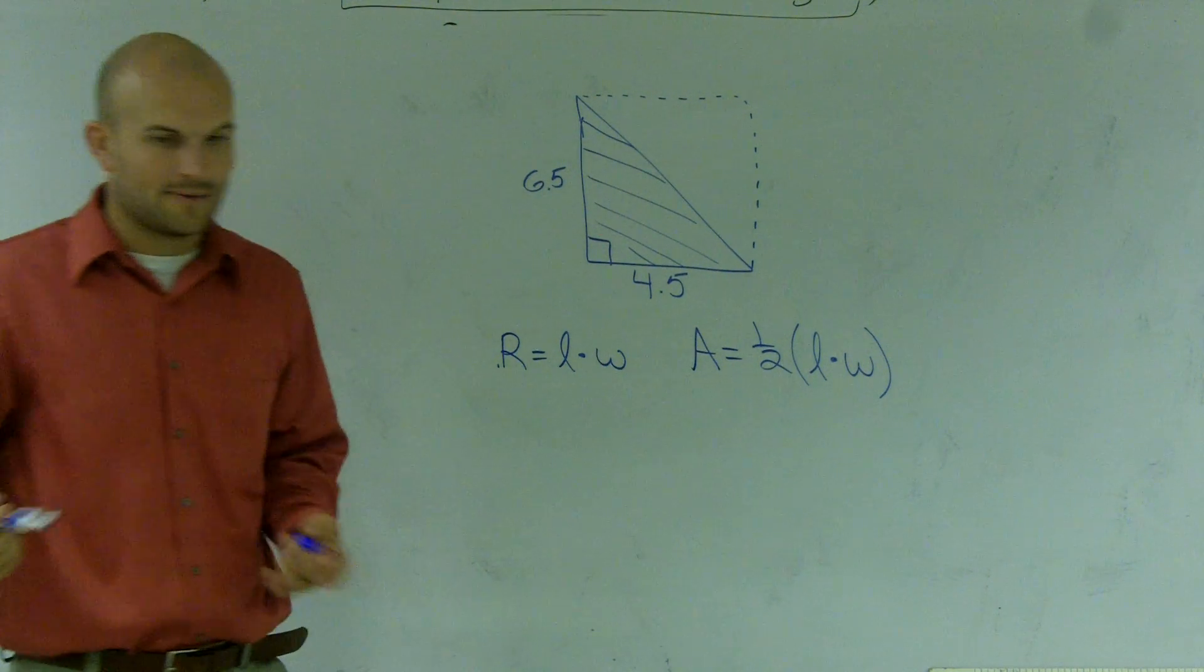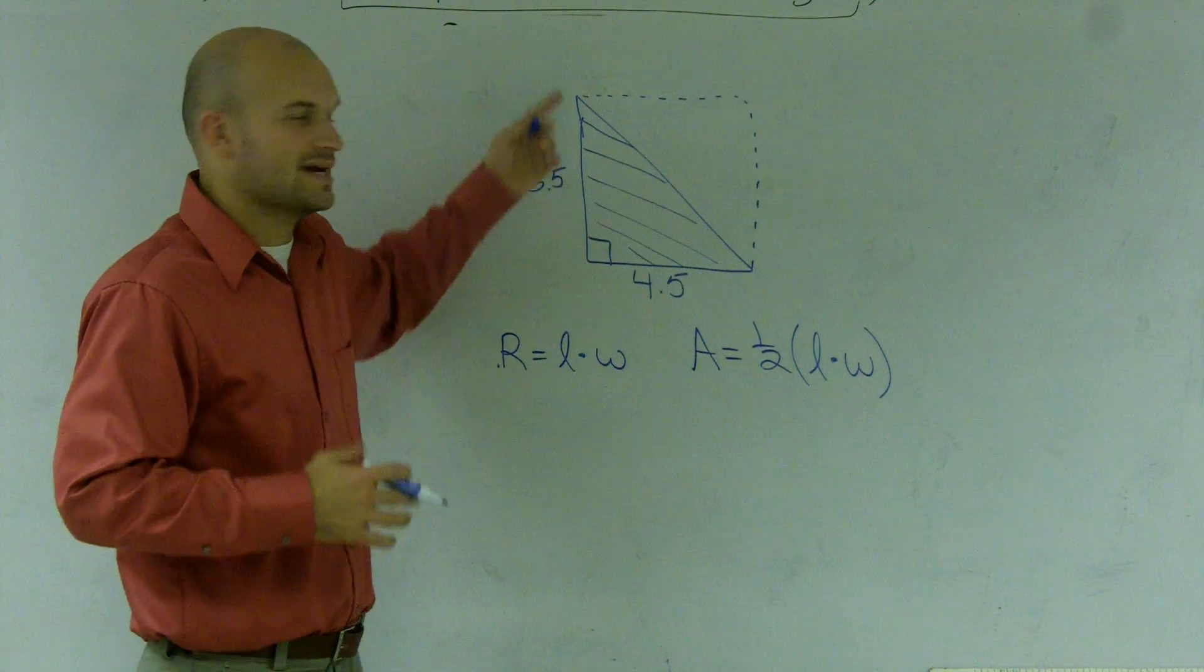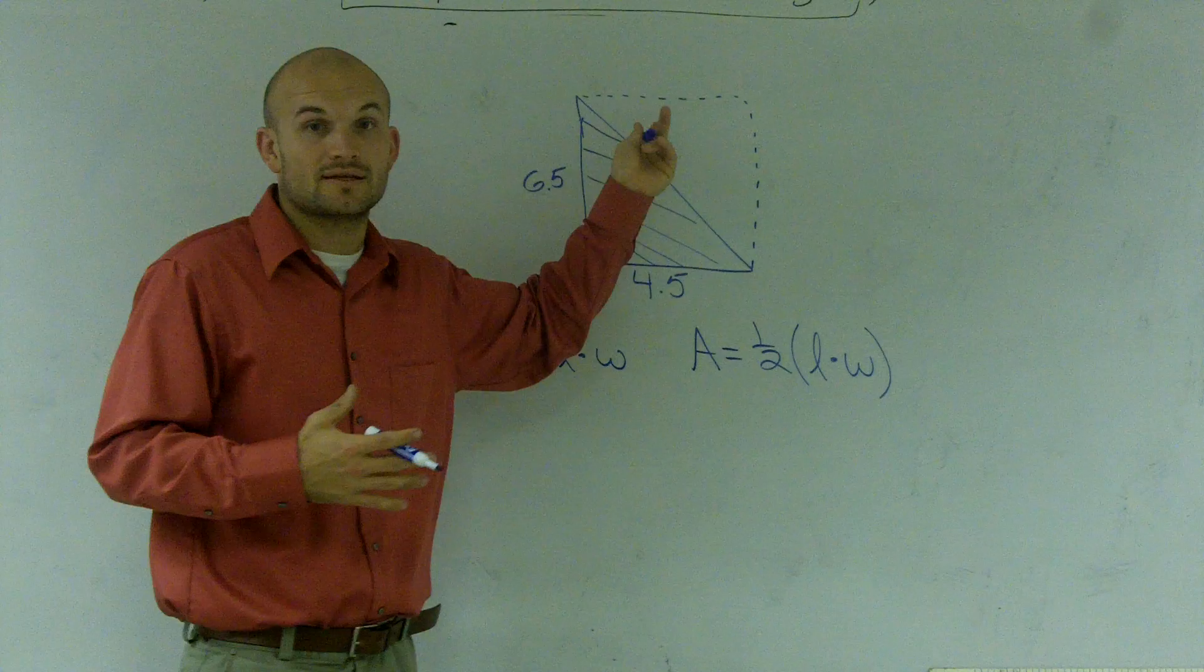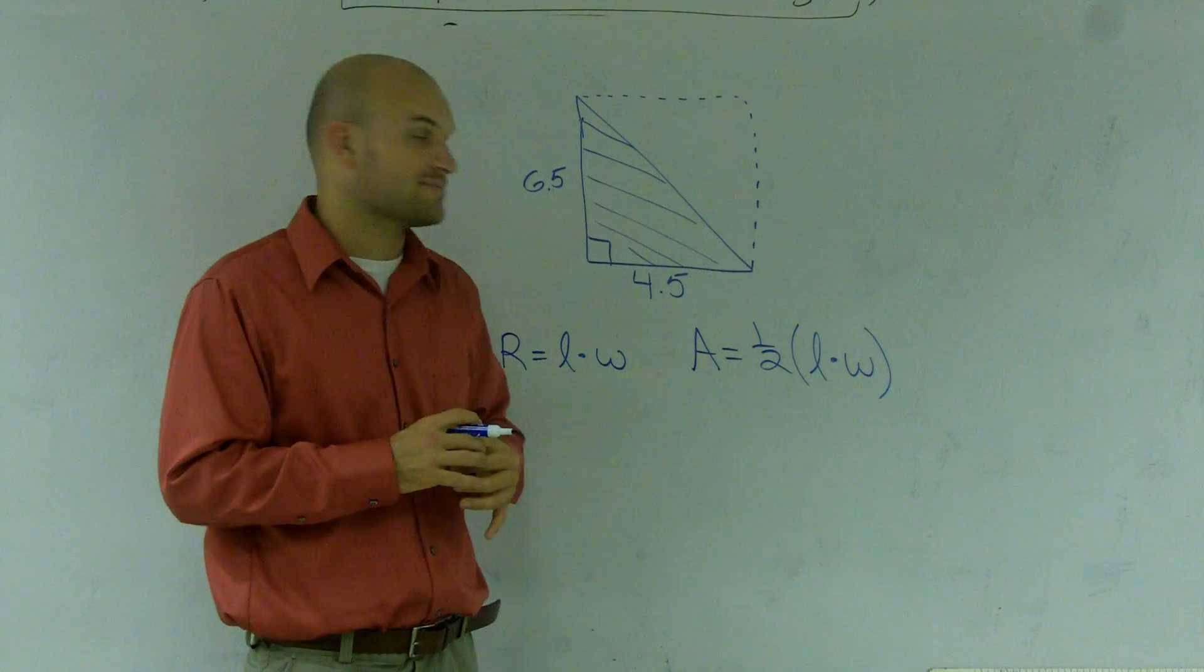Now, a lot of people get messed up. They don't really know what length and width are. Your length can be either the bottom or the side, it doesn't really matter. A lot of times we say base times height is sometimes even a better example. In another triangle, I'll explain why we want to use base times height.